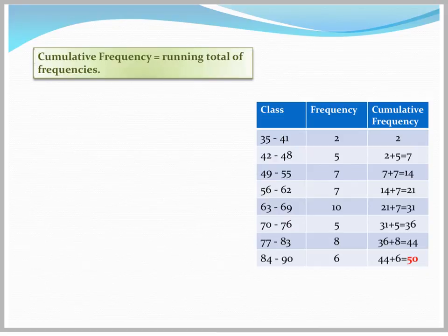Now again, with the cumulative frequency, there's a great little check at the end. Your final number should equal 50. You should total up to the number of data you have in your original set. If you don't, then you've done something wrong. So that's a great way to check that you've done everything correctly. Your final cumulative frequency value should be the same as the number of data pieces you have in your set.